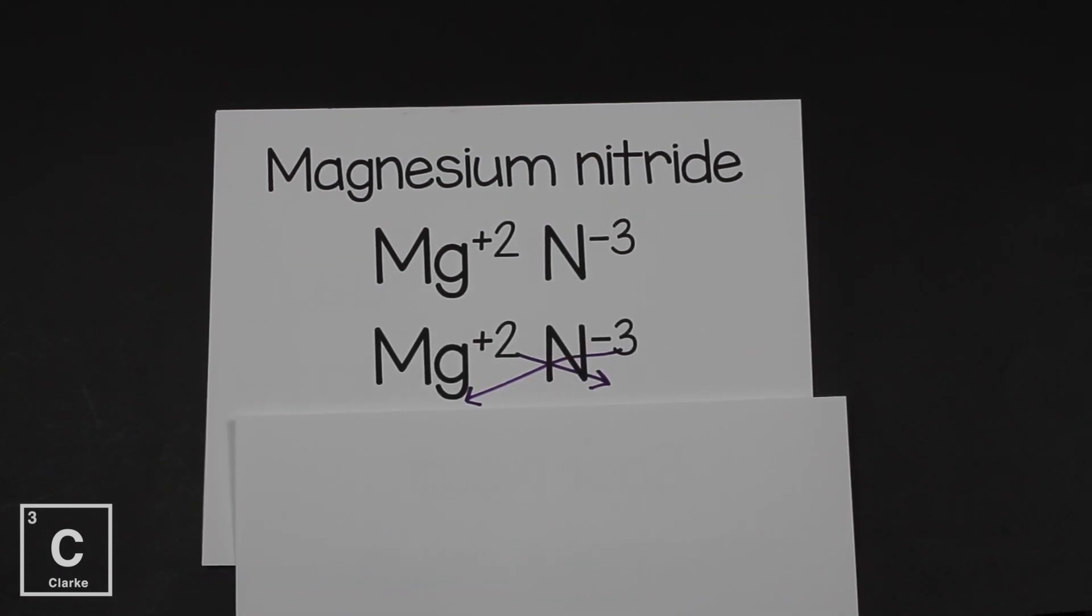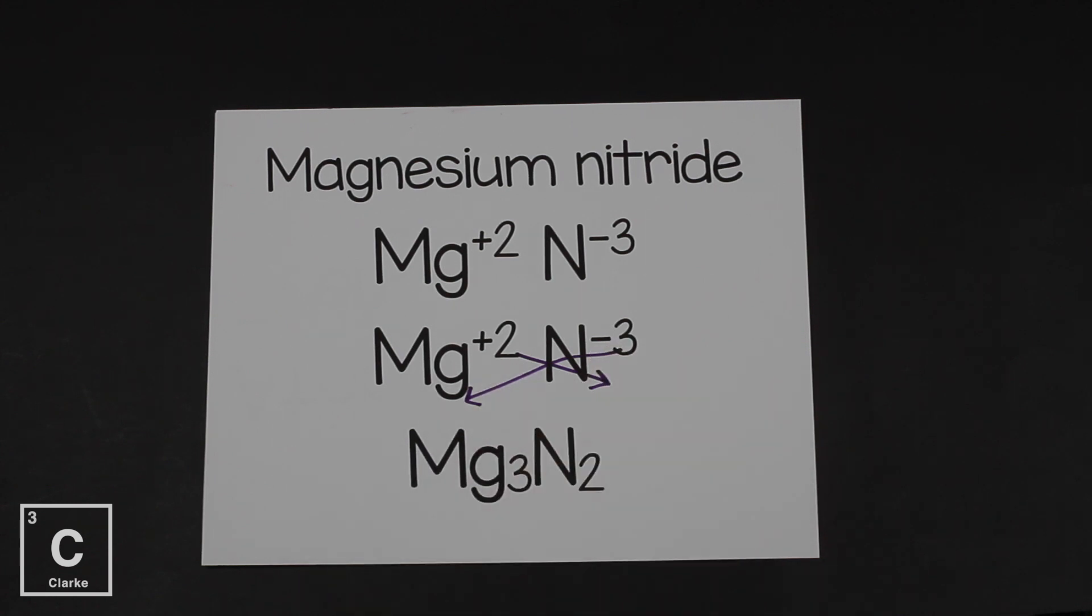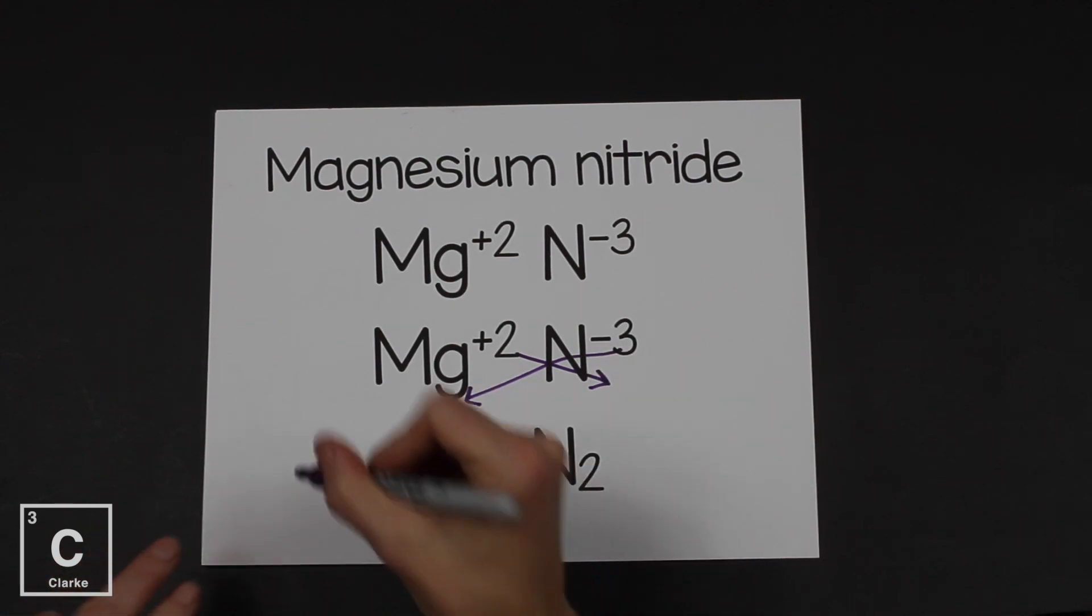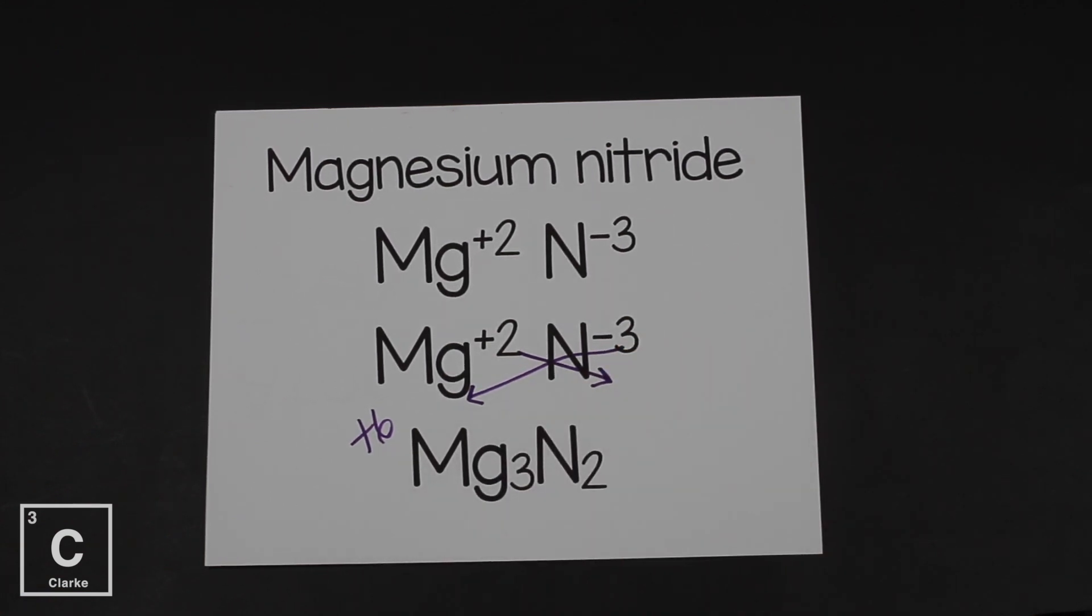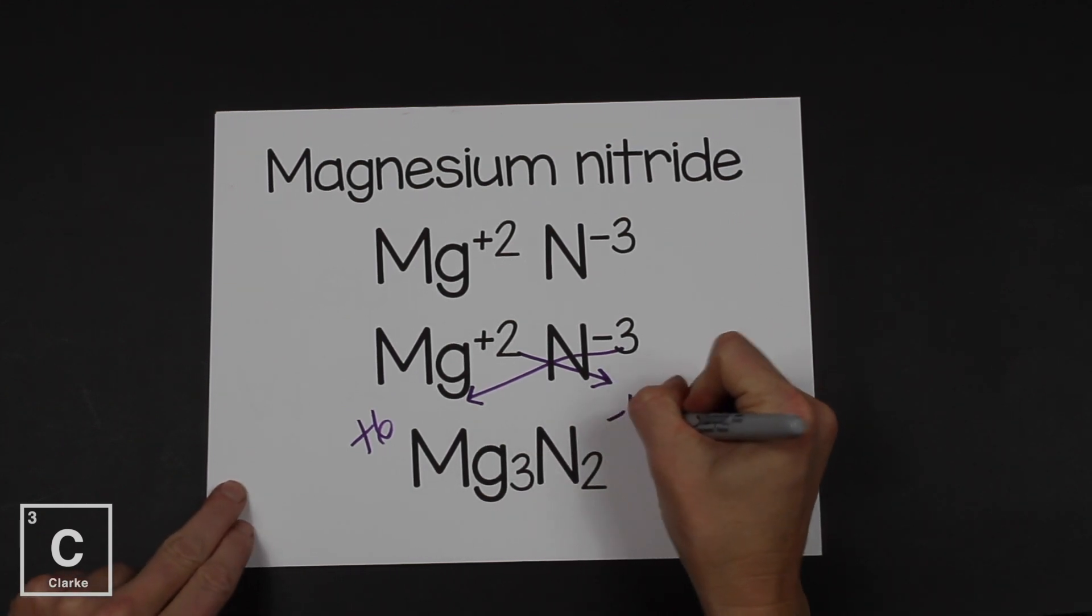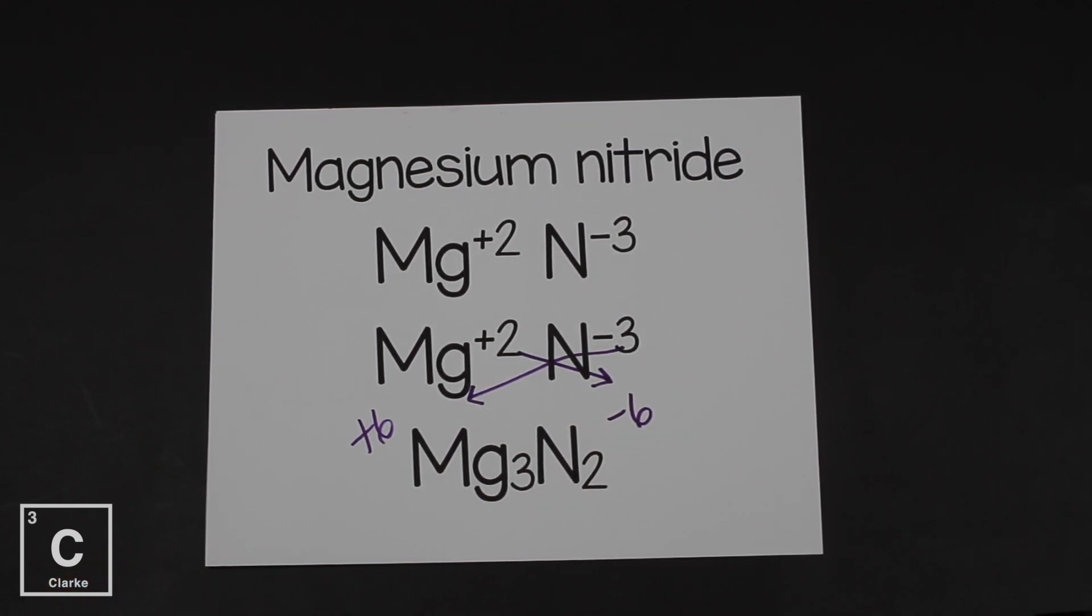That does not equal zero. The shortcut is just to cross those numbers down and ignore the sign. No plus, no negative, just the two and the three. So we're going to give the three to magnesium and the two to nitrogen. Because if we have three plus two charges, that's a plus six. And if we have two negative three charges, that's a negative six plus six negative six. That equals zero.